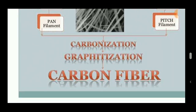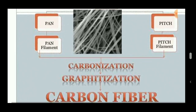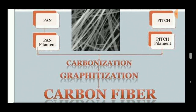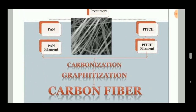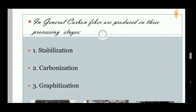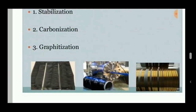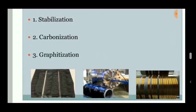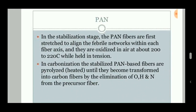Carbon fiber forms through three processes: stabilization, carbonization, and graphitization. Carbonization is a process in which the oxygen, hydrogen, and nitrogen atoms are removed from a compound. Graphitization is a process in which the carbonized compound is heated to about 2000 degrees Celsius. These are the three processing stages for the production of carbon fiber: first stabilization, next carbonization, and then graphitization.